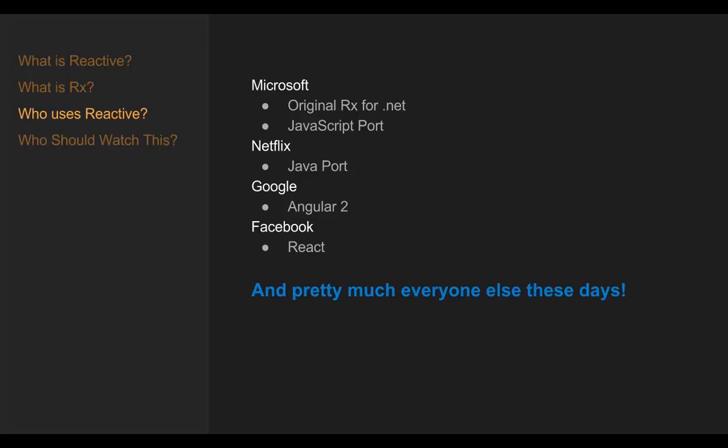Then we have Netflix, which is a huge part of the movement for reactive code. In fact, they wrote the Java port for reactive extensions, so the Netflix infrastructure is very reactive. And we have Google — Angular 2 actually uses and has a dependency on Reactive Extensions for JavaScript version 5, the exact thing we're going to be learning in this course. So if you have any interest in working with Angular 2, you're going to have to know reactive extensions.